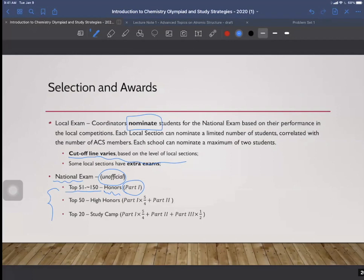And then is the top 50. They will be awarded a high honor. So there is a formula. Very interesting. Part 1, let's say, in total is 60 points, right? It would be multiplied by 5/4. So if I didn't calculate wrong, it will be 72.5.